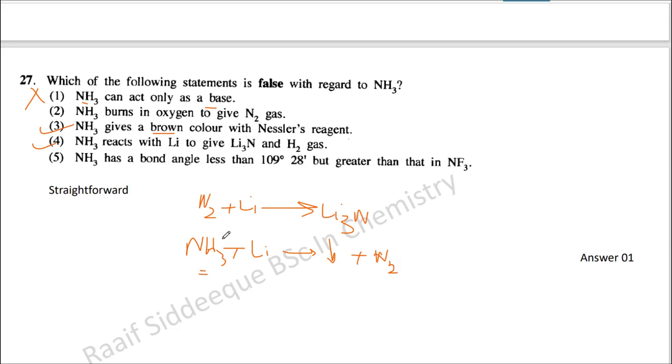NH3 has a bond angle that is less than 109°28' but greater than that in NF3. So if you consider about ammonia, you have hydrogen like this. Since there is a lone pair, this is pyramidal. If you have tetrahedral, it will be around this bond angle 109 something.